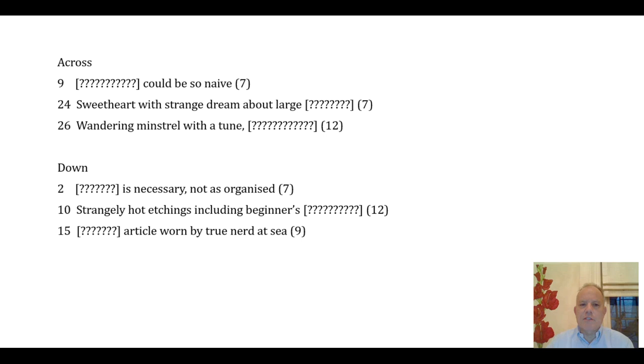So let's start with 9 across which is the first one and happens to be the one which gives you all the letters straight away. First of all, you spot the anagram indicator here which is 'could be', and then the other letters are 'so naive' and that's seven letters and we need a seven letter answer. As I say, I've concealed the definition so that's not guiding us.